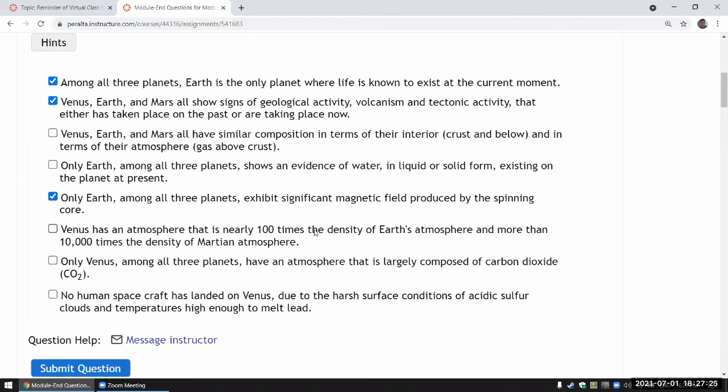Venus has an atmosphere that is nearly 100 times the density of Earth's atmosphere and more than 10,000 times - I think that sounds right. Martian atmosphere is at like 1% of Earth's atmosphere. That's one thing I misspoke in an earlier virtual class session. I think I might have said 0.1%. I think it's 1%, Mars's atmosphere compared to Earth.